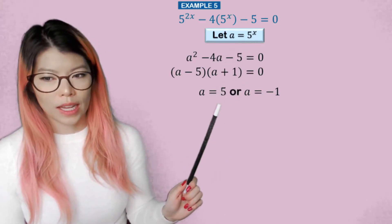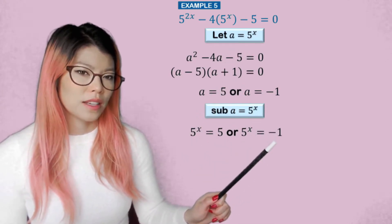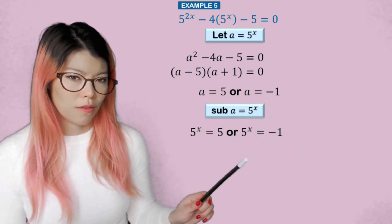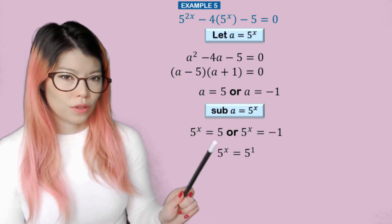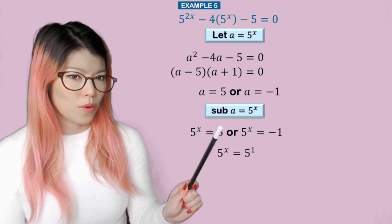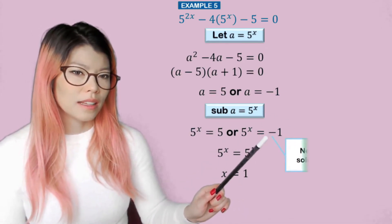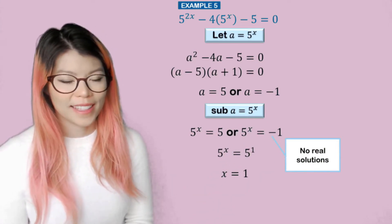Now a is 5^x. So let's sub that back in. So 5^x equals 5 and 5^x is equal to negative 1. Now we can't make 5^x equal to negative 1, but we can make 5^x equal to 5. So we only have one solution, 5 to an invisible 1. So x is equal to 1. So this one here has no real solutions. So make sure you write that when you're writing your answers.